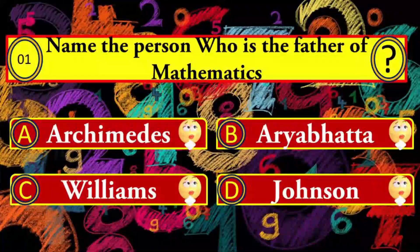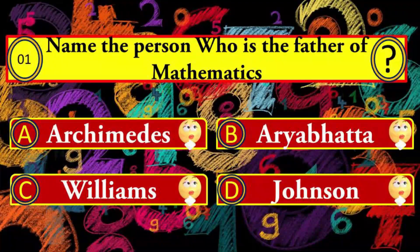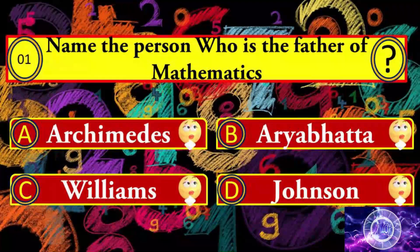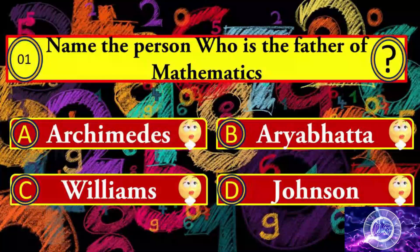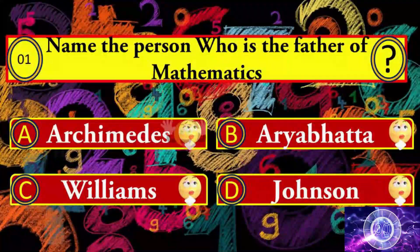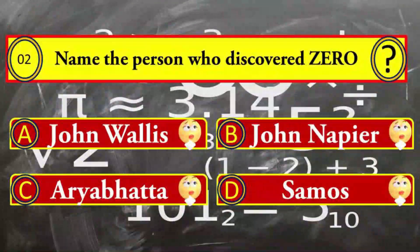Question number one: name the person who is the father of mathematics. Your options: A) Archimedes, B) Aryabhatta, C) Viriams, and D) Johnson. Archimedes is the right answer.